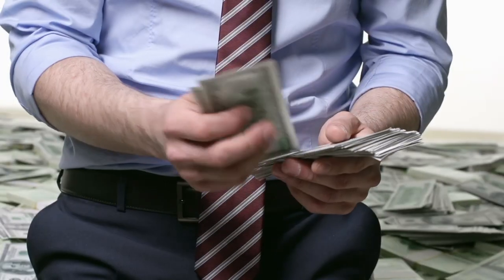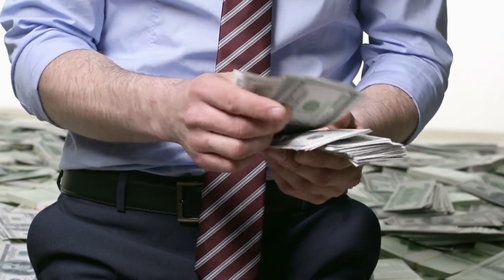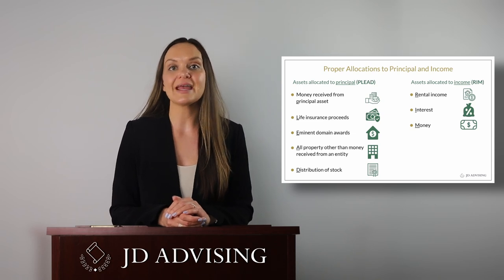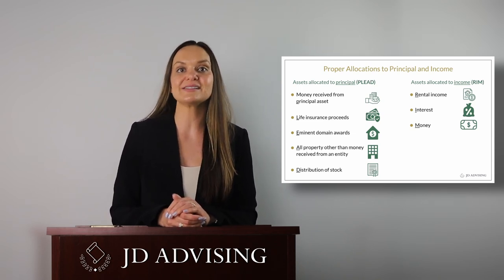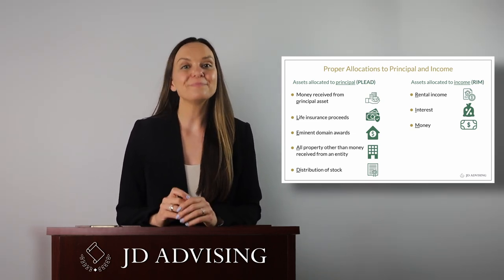The next duty that a trustee has is the duty to allocate property to principal and income. This dictates whether receipts earned during the administration of the trust should be allocated to the principal or the income. Most states have adopted the Uniform Principal and Income Act, or the UPIA, which specifies how receipts should be allocated. The general rule is that ordinary expenses should be allocated to income and extraordinary expenses to principal. Assets allocated to principal include money received from a principal asset, life insurance proceeds, eminent domain awards, and all property other than money earned from an entity, as well as distributions of stock. Assets allocated to income include things like rental income, interest, and money.